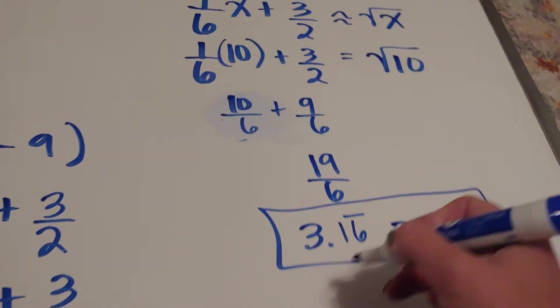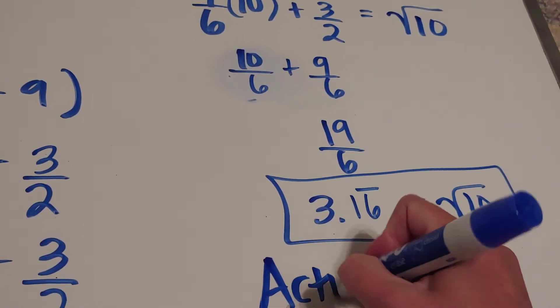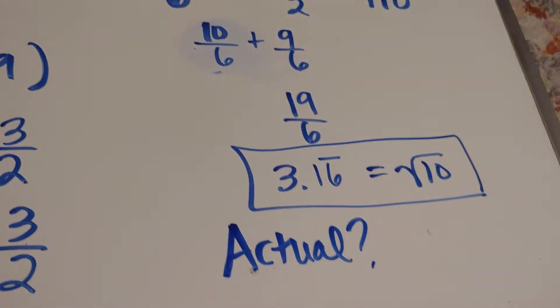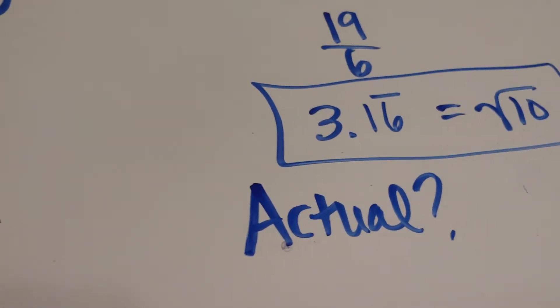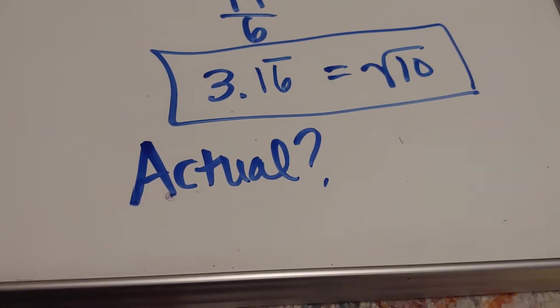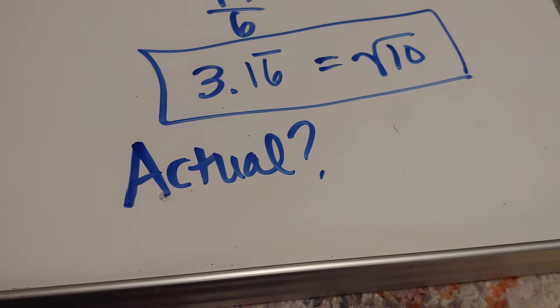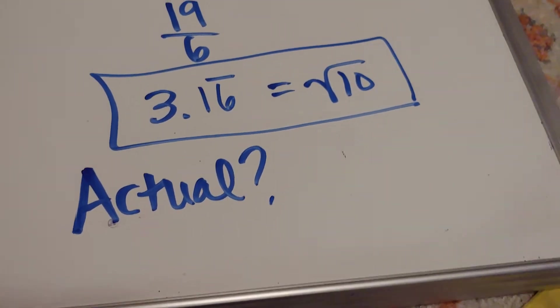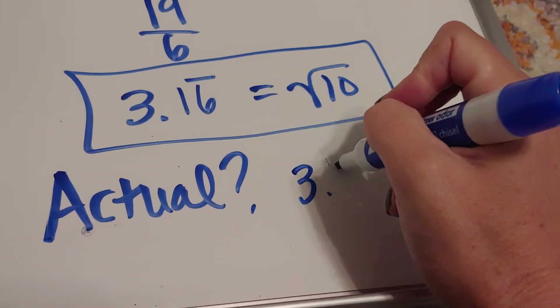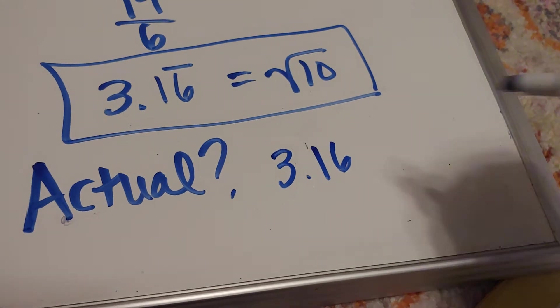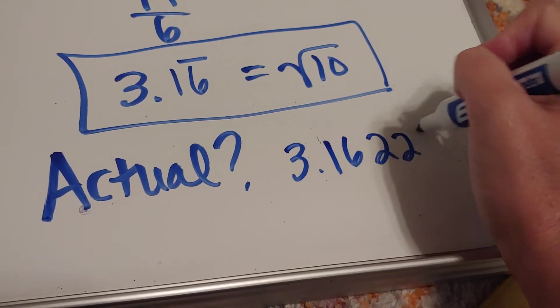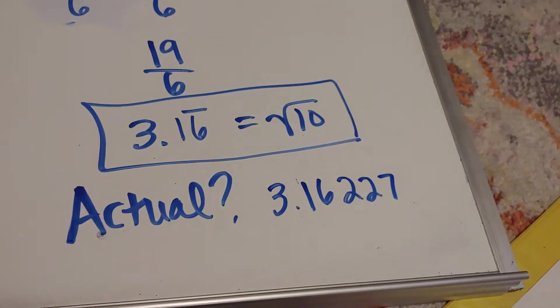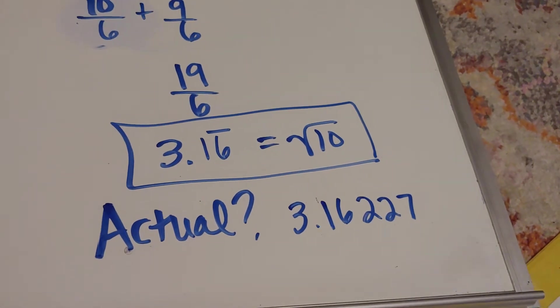Now, what is the actual? Well, the actual is just take your calculator and figure out what the square root of 10 is. And if I take my calculator and plug in the square root of 10, I get 3.16227. So we're really stinking close.